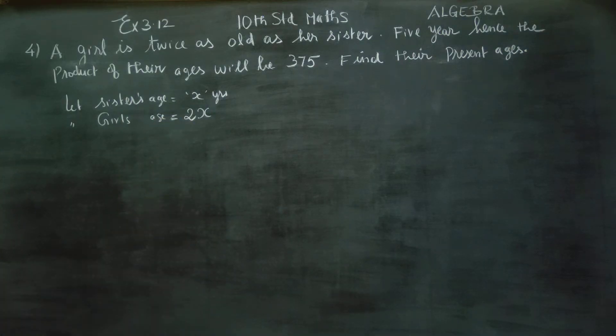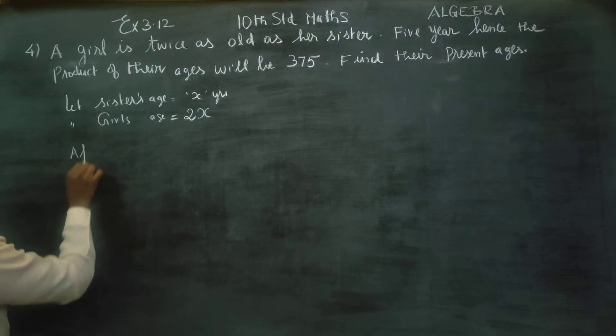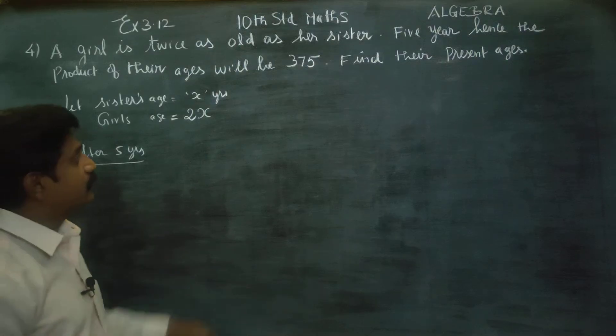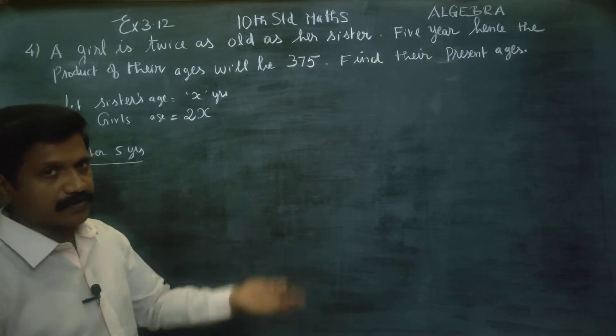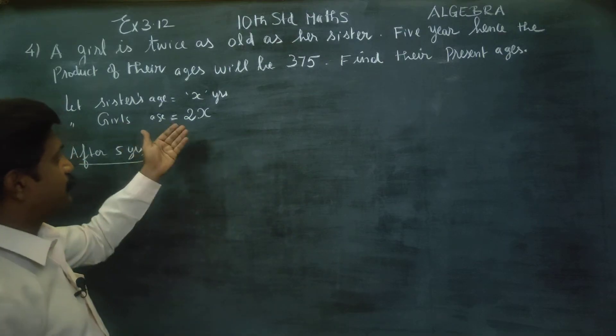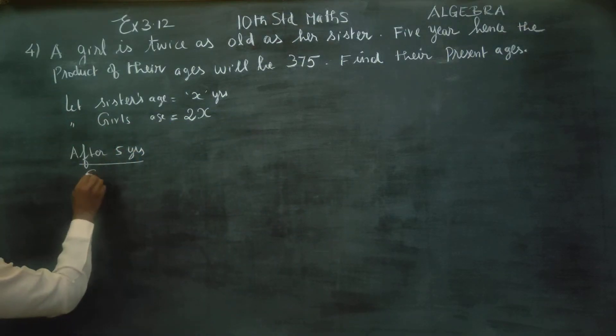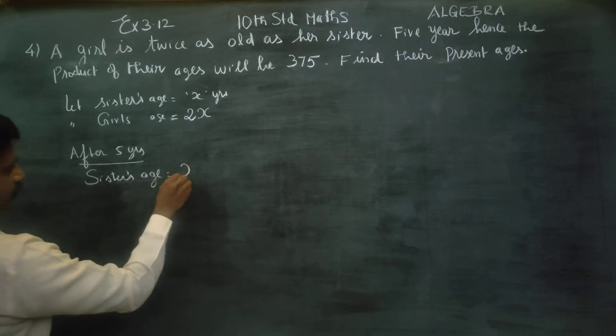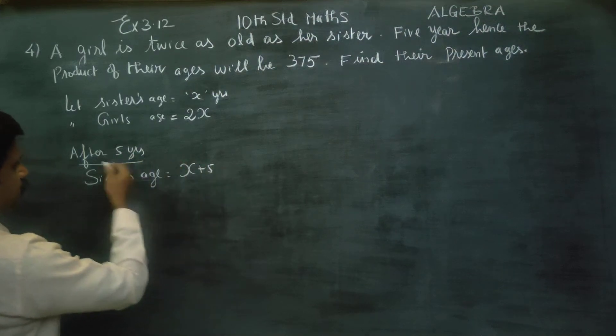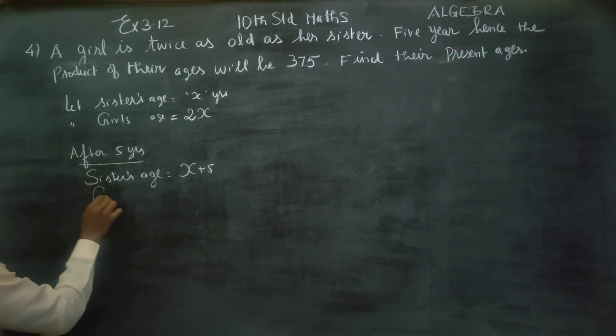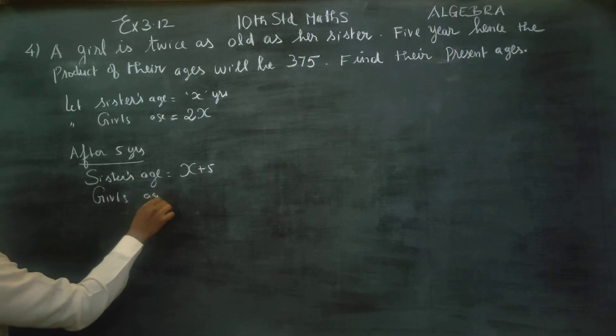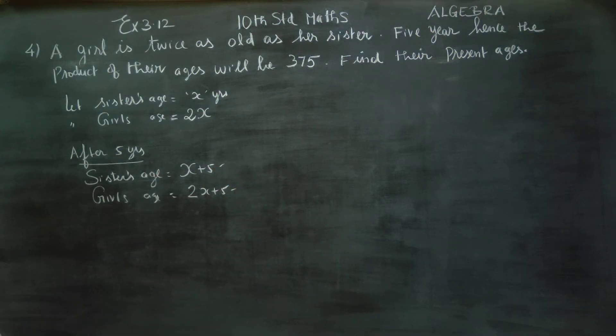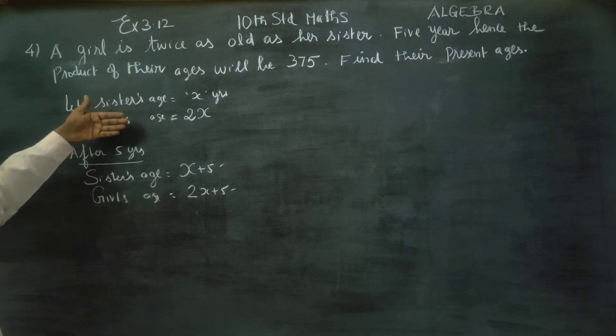Five years hence, after five years, sister age is sister's age, x plus 5. Girl's age, 2x, it is present age.